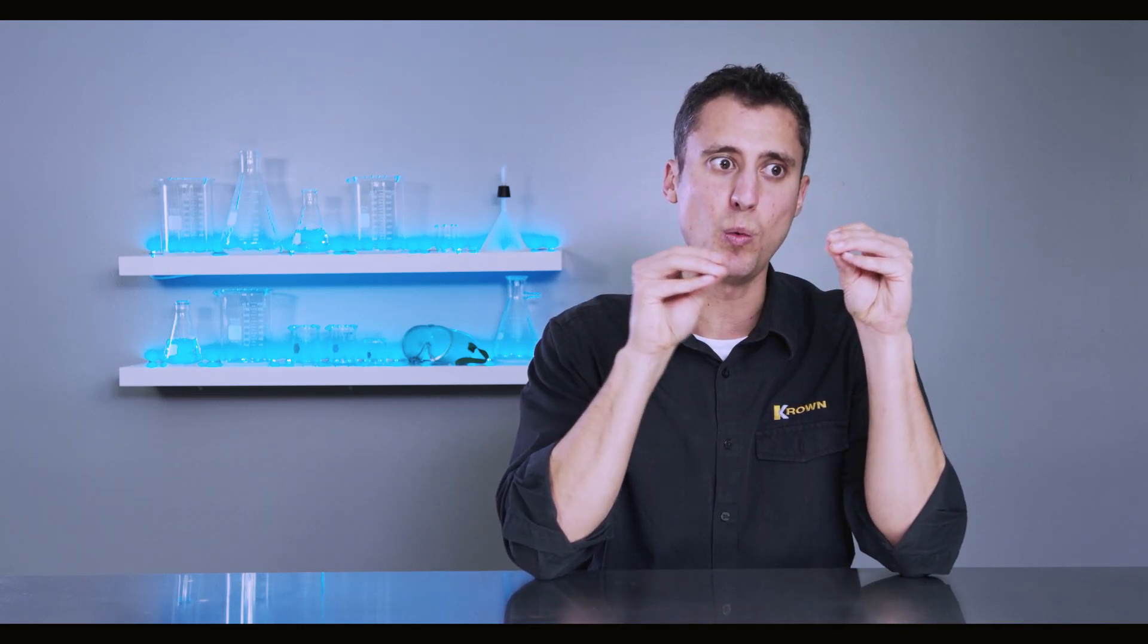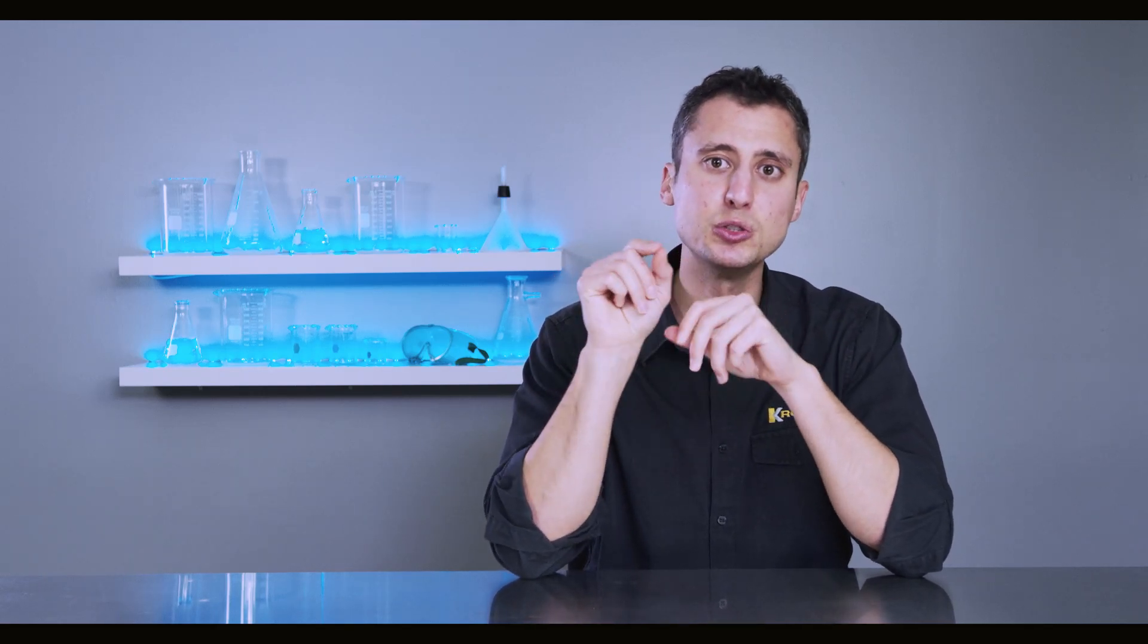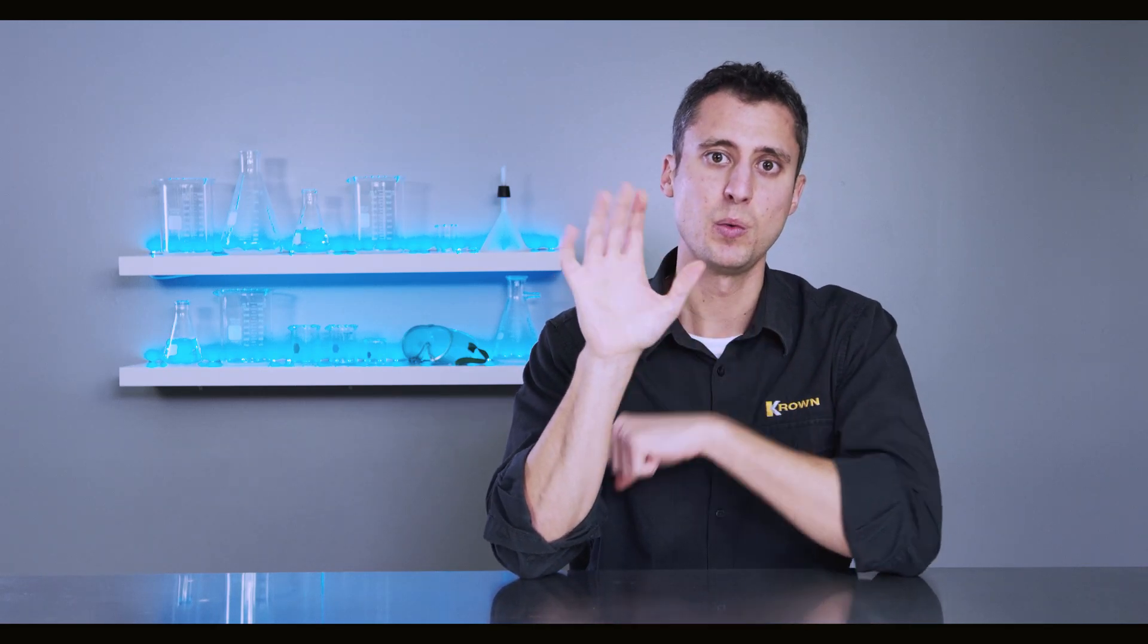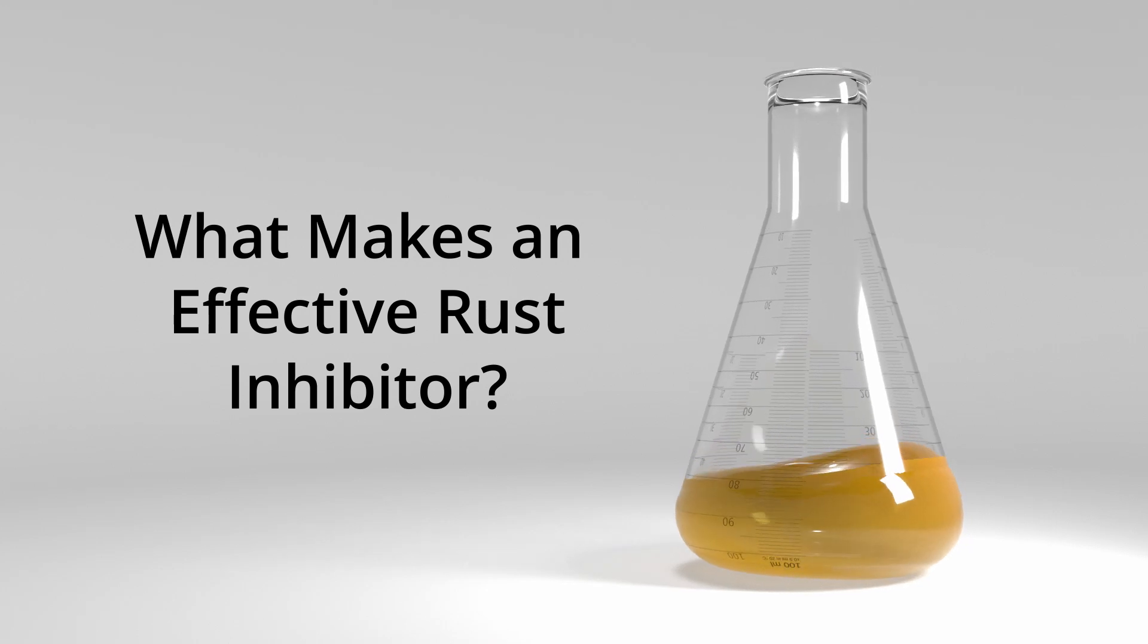So now we've covered why it is that you need rust protection on your vehicle. But how do you choose the right rust protection? Well, there's five key features that make a rust protection product an effective rust inhibitor.